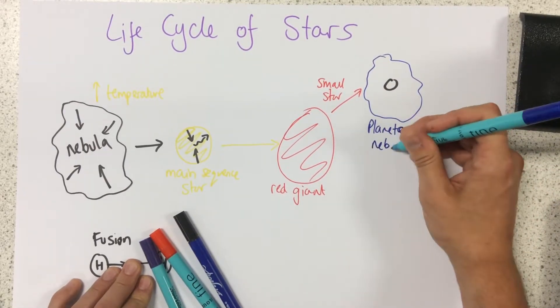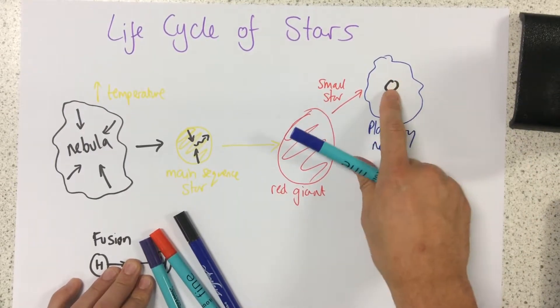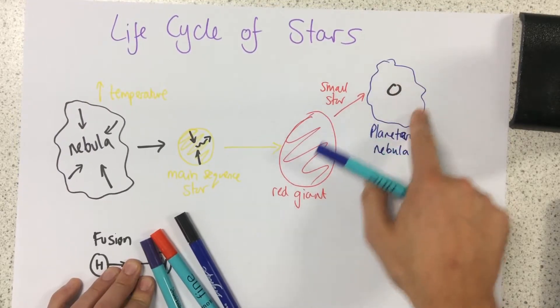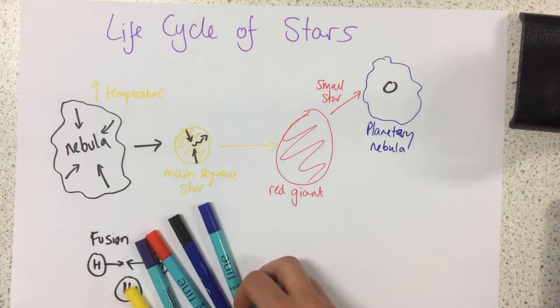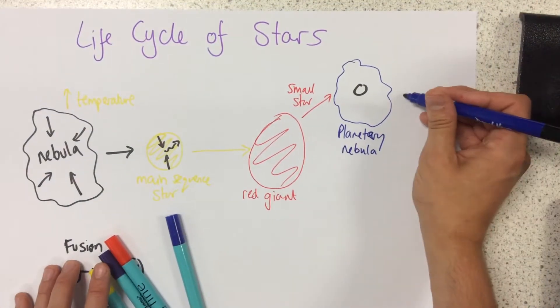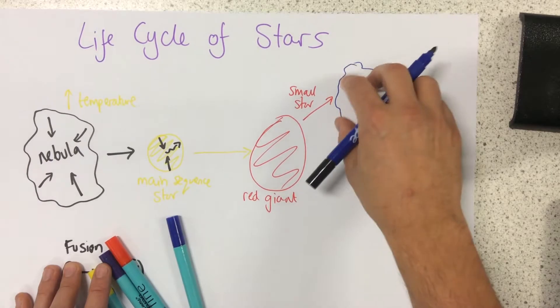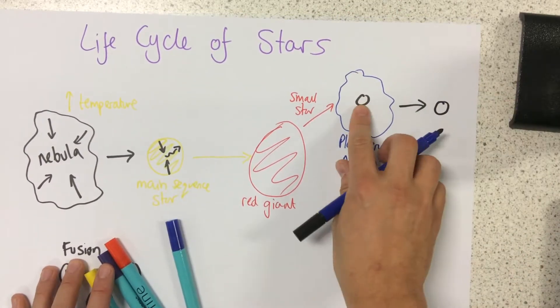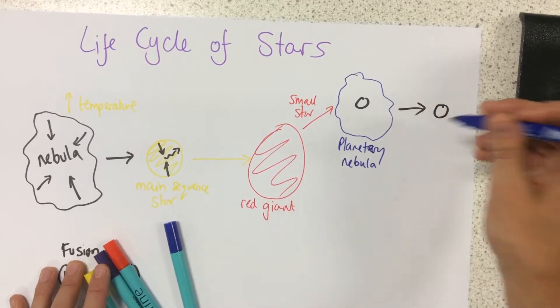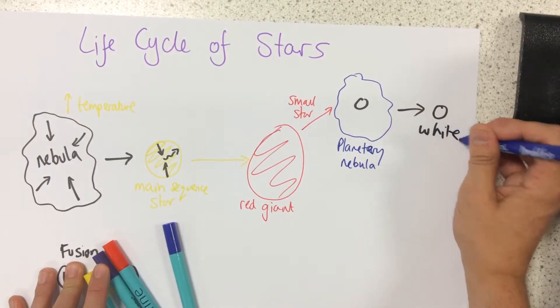A planetary nebula has this little hot core and then outside of here we have just dust and gas which start to escape out into space. What happens to our planetary nebula is all this dust and gas leaves over time, leaving this really hot core called a white dwarf.